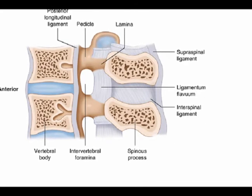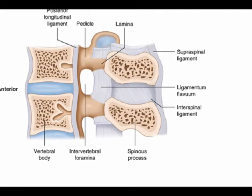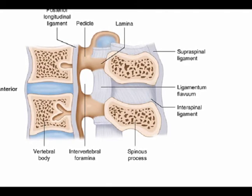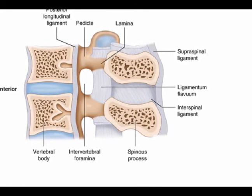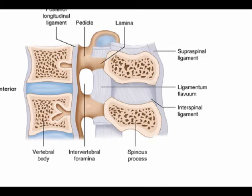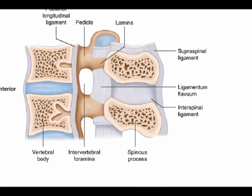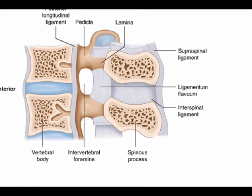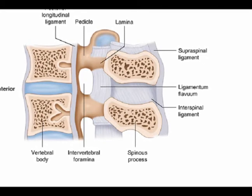It runs along the posterior aspect of the vertebral body inside the vertebral column from the body of C2 to the sacrum.